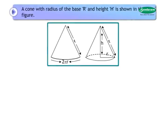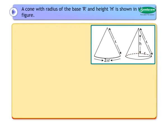A cone with radius of the base R and height H is shown in the figure. Therefore, slant height L is equal to the square root of H squared plus R squared.